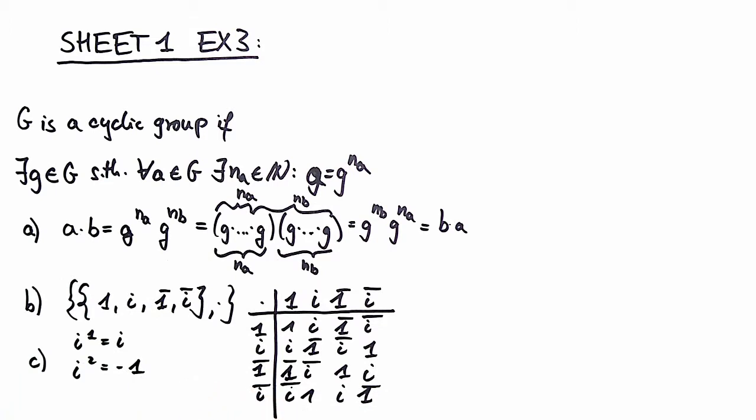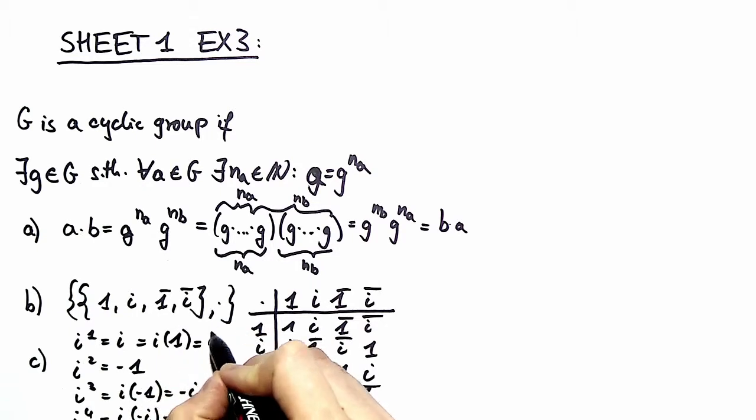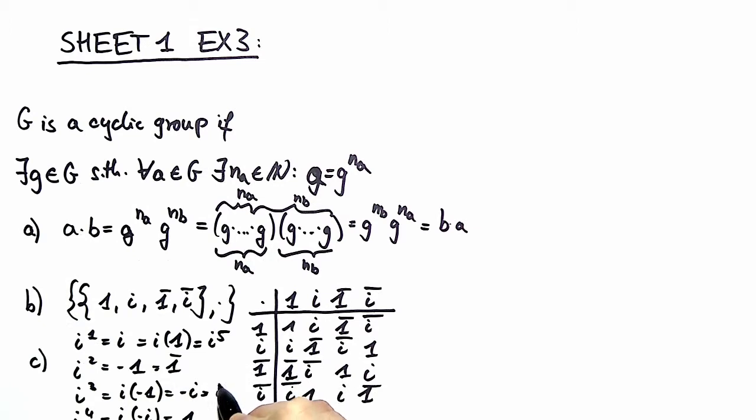i to the power of 2 is by definition minus 1. Now let's try it out if it proves the other two too. So i to the power of 3 is i times minus 1, which is minus i, and i to the power of 4 is i times minus i, which is 1. And then we can see that this is i times 1, namely i to the power of 5. Here we have one bar, here we have i bar. So it's proven. The group we have here is cyclic.